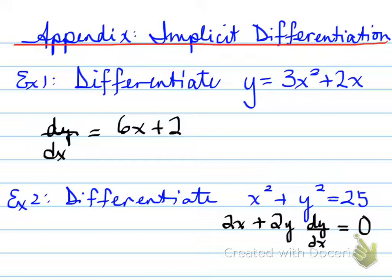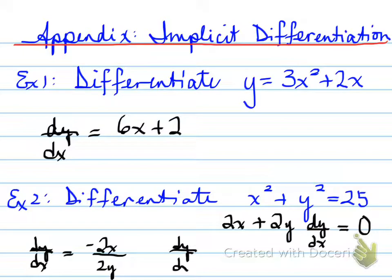What do you do with that function now? The whole point is you're supposed to differentiate and get dy/dx by itself. dy/dx is equal to negative 2x, and you're going to divide by 2y. You can simplify that to get dy/dx is equal to negative x over y. And this, folks, is how you differentiate using implicit differentiation.